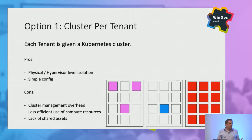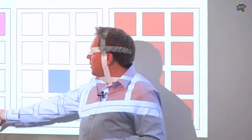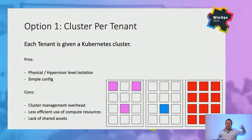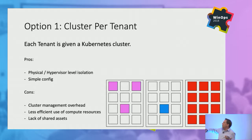The cons of individual clusters per tenant: first, cluster management overhead — instead of managing one cluster, I'm now managing 50 clusters. Second, less efficient use of compute resources — that white space, if all I need is to efficiently run this application, now I've got wasted memory and CPU. One of the benefits of Kubernetes is tightening down our spend and squeezing every byte of memory and CPU out of those clusters. Third, lack of shared assets — things like secrets and storage that we build into a cluster. If I have a secret used across all applications, I need to host that secret in each individual cluster.